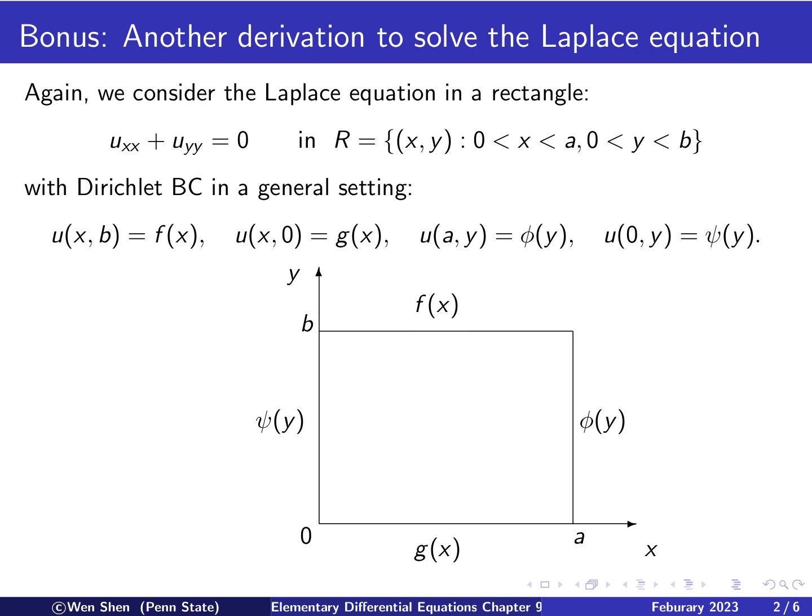So in video 9 of chapter 9, we derived the formal solution for the Laplace equation in 2D in a rectangular domain, where we assigned the Dirichlet boundary condition. The problem setting is given here in the previous video, where we solved it by cutting it into four sub-problems. In this video, we will look at a slightly different way of deriving the solution.